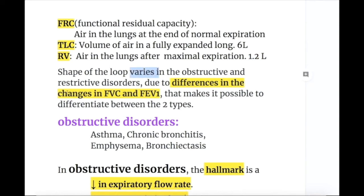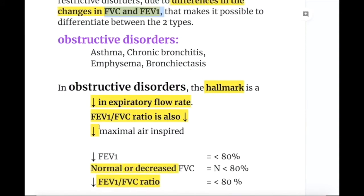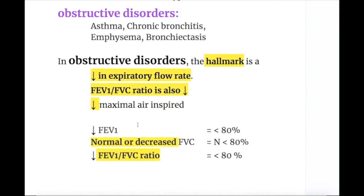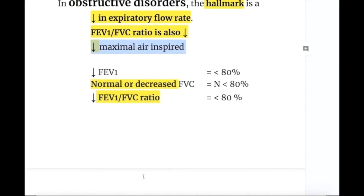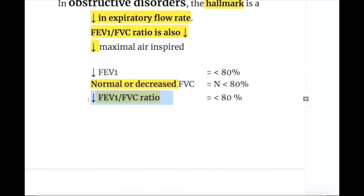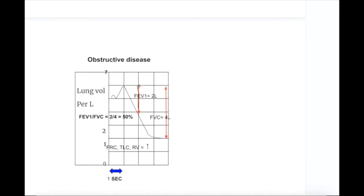Obstructive disorders include asthma, chronic bronchitis, emphysema, and bronchiectasis. The hallmark of obstructive disorders is a decreased expiratory flow rate; FEV1/FVC ratio is decreased, and there is a decrease in maximal air flow. In obstructive disorders, FEV1 is reduced to less than 80% with normal or decreased FVC, and the FEV1/FVC ratio is reduced below 80%.